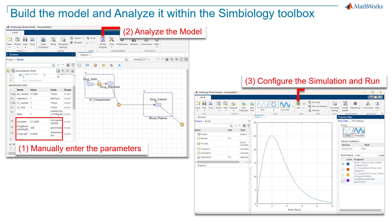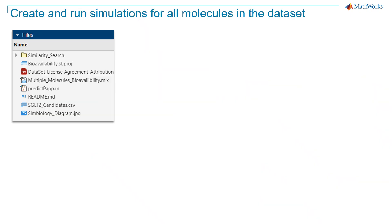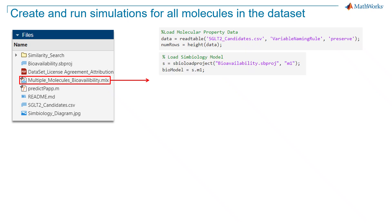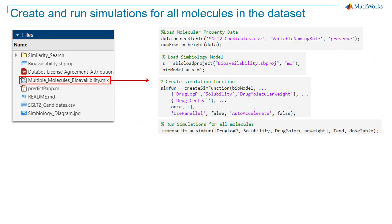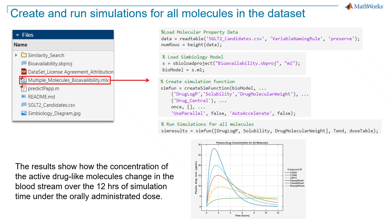But if you want to run this model for multiple molecules, as it is our intention in this video, then you can do it by running this live script in your main directory. This code loads the database that we generated in step one, which contains six molecules, and it loads the SimBiology model that we just reviewed. It plugs in solubility, log P, and molecular weight from the dataset into the model and runs the simulations for all the molecules in the dataset. The results now show how the concentration of the active drug-like molecules change in the bloodstream over the 12 hours of simulation time under the orally administered dose.